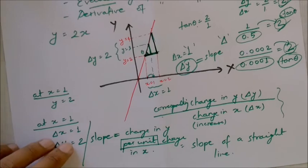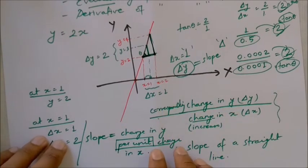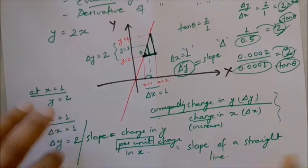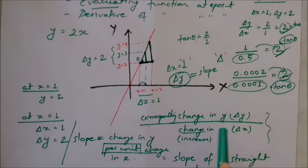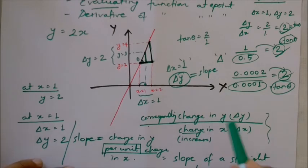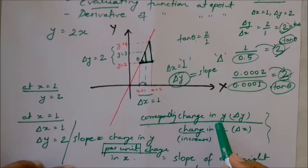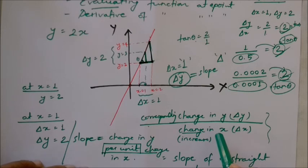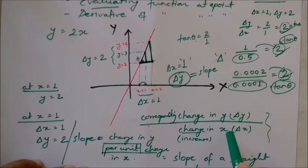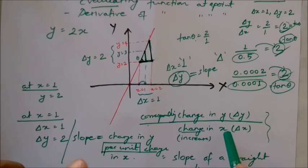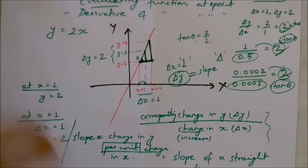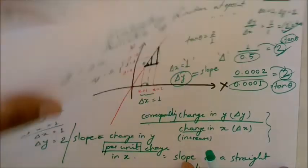The slope of the line — this is the concept of per unit change. The formula is: change in y divided by change in x. This formula is universal. This is the slope — this is the answer.